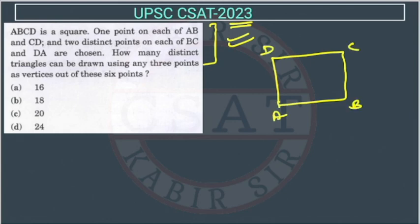One point on each of AB. So one point is here, suppose here, and CD, one point here. And two distinct points on each of BC and DA. So two points are on BC and DA. DA is this one.